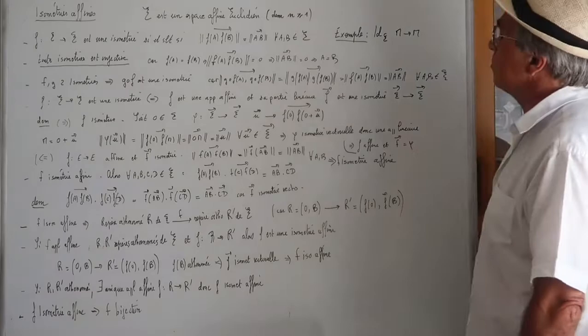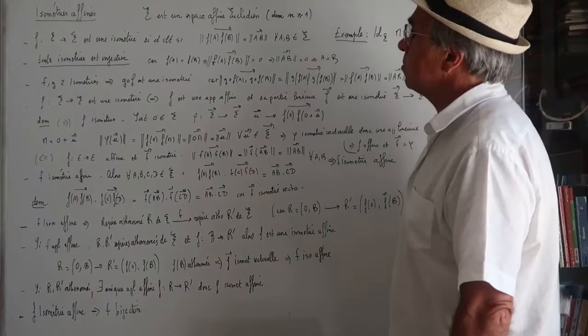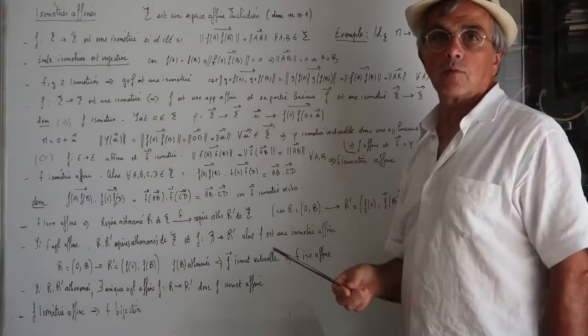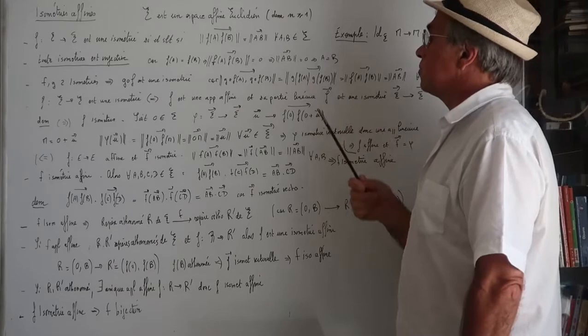Exemple : l'identité. Toute isométrie est injective, parce que si F(A) est égale à F(B), la norme du vecteur F(A) à F(B) va être égale à la norme de 0, donc ça fait 0, et comme elle est égale à la norme de AB, et bien alors norme de AB égale 0, donc A égale B.